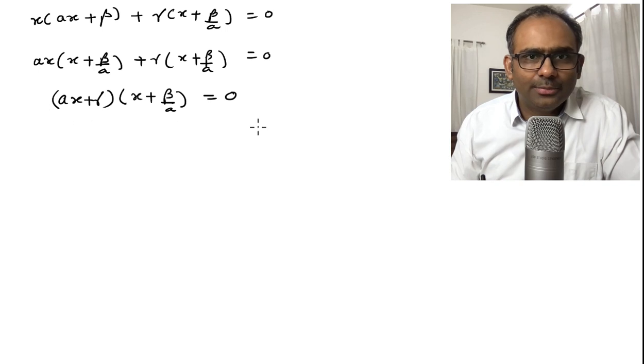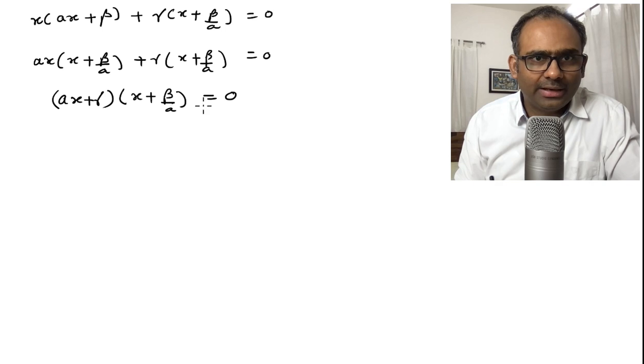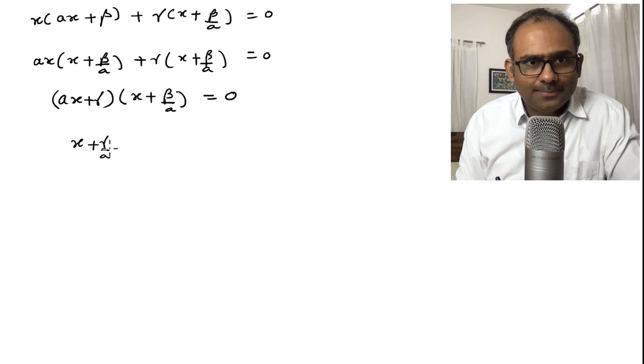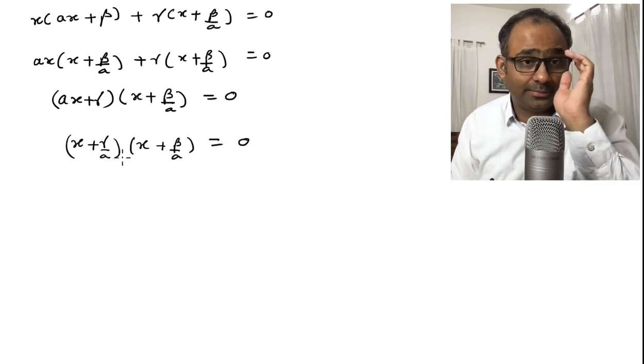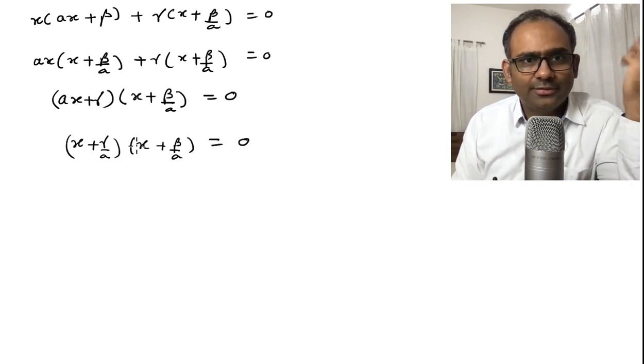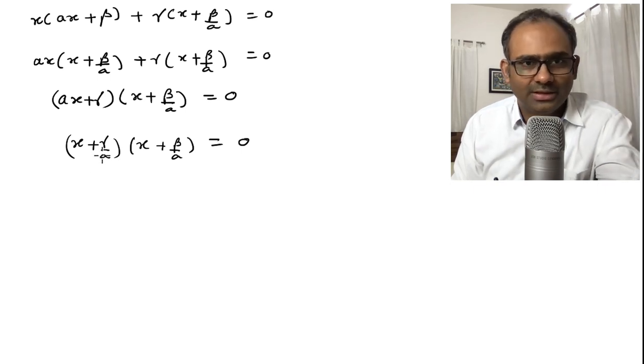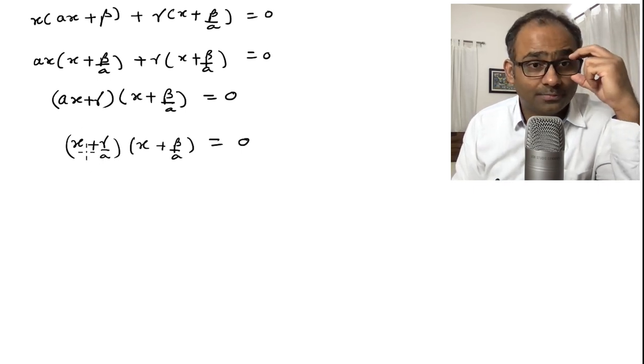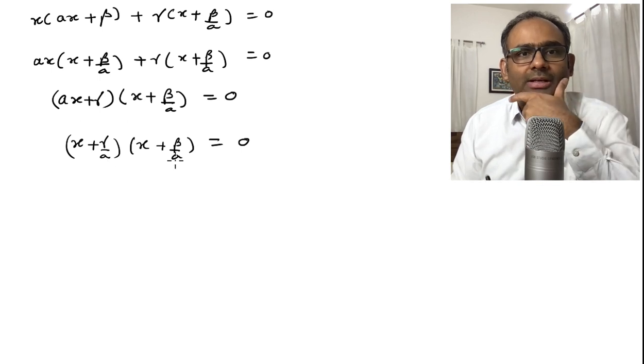If you do not find this very beautiful this expression we can make it slightly nicer by dividing by a because this entire equation I can divide by a and the division I will do in this factor. So, it becomes x plus gamma over a times x plus beta over a is equal to 0. It is the same equation multiplying by some constant does not matter. But when you multiply here it gives you x square it does not give you ax square but you can multiply the entire equation by a and you get back the original one. You can put it in this form as well.